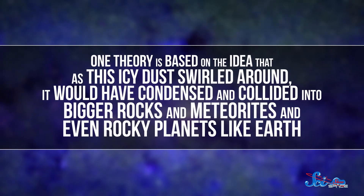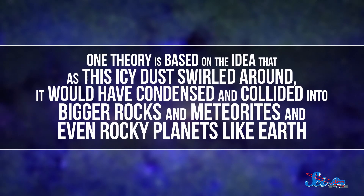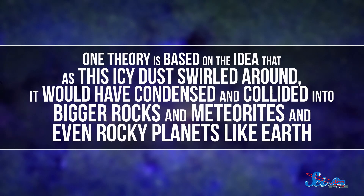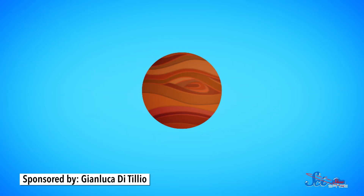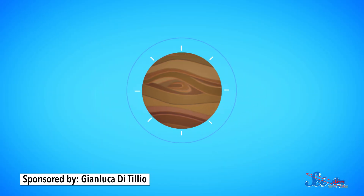But how did it get to Earth? Scientists have a few different theories, but they all have some problems, and we still don't really know how to account for those problems. One theory is based on the idea that as this icy dust swirled around, it would have condensed and collided into bigger rocks and meteorites, and even rocky planets like Earth. So it's possible the water ice was part of the matter that crashed together and created our planet in the first place — and what if it never left? At first, the planet would have been incredibly hot, and water on the surface would have evaporated right back into space. But these scientists think that some water stuck around, or that there was water that seeped up to the surface as the Earth cooled. After around 500 million years, Earth's atmosphere and temperature were probably stable enough that water could condense and fall back to the surface. But that doesn't necessarily account for all of the water, because a lot of it would have been initially lost.